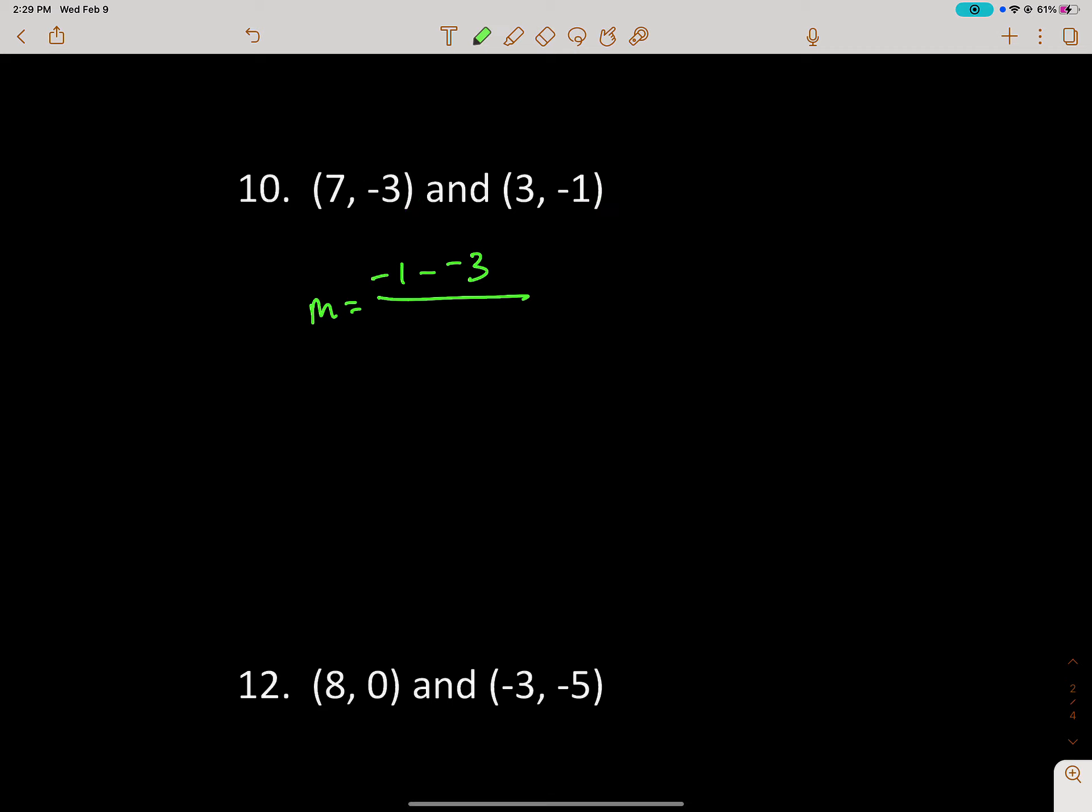And then now I'm going to do x minus x. So I get negative 1 plus 3 and 3 minus 7. Negative 1 plus 3 is positive 2. 3 minus 7 is negative 4.